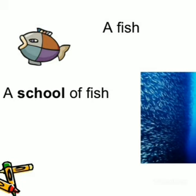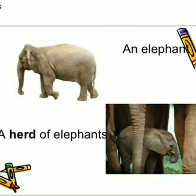One fish is a fish. A group of fish is called a school of fish. So, school is a collective noun. One elephant is an elephant. But a group of elephants is called a herd of elephants. So, herd is a collective noun used for a group of elephants.